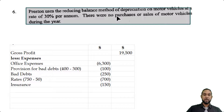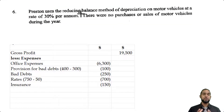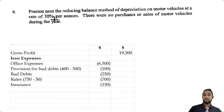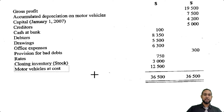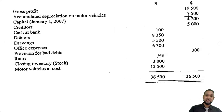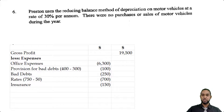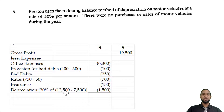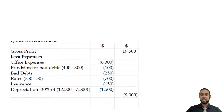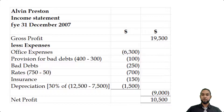The last item is depreciation — 30% per annum on the reducing balance method. Under the reducing balance method, to find depreciation expense we multiply the depreciation rate (30%) by the net book value of the non-current assets. Net book value is the cost of the asset minus the currently accumulated depreciation before the current year's calculation. Motor vehicles cost $12,500 and the accumulated depreciation existing is $7,500. So: 30% × ($12,500 − $7,500) = 30% × $5,000 = $1,500. Those are all the expenses — total $9,000 — which when subtracted from gross profit gives us a net profit of $10,500.